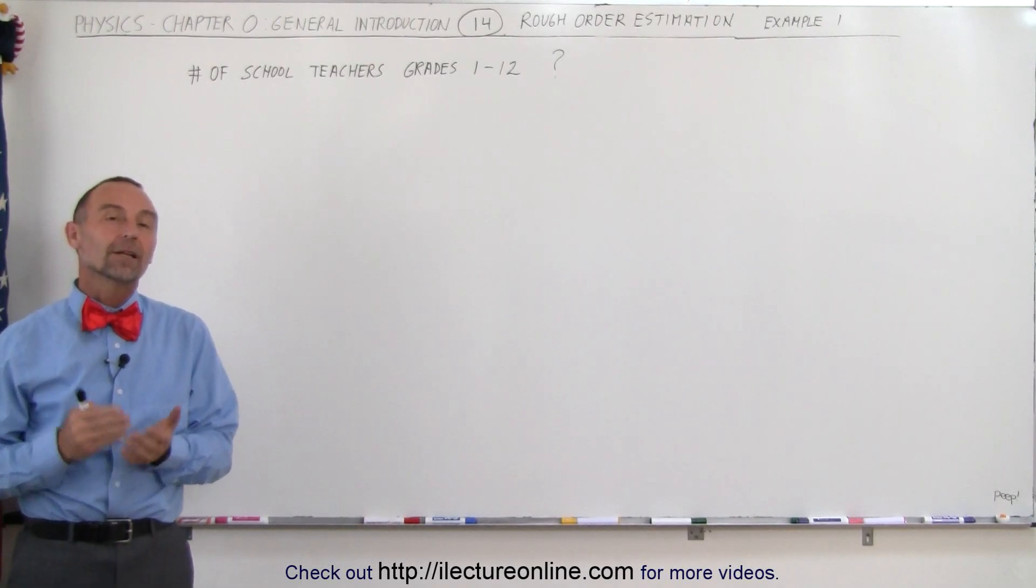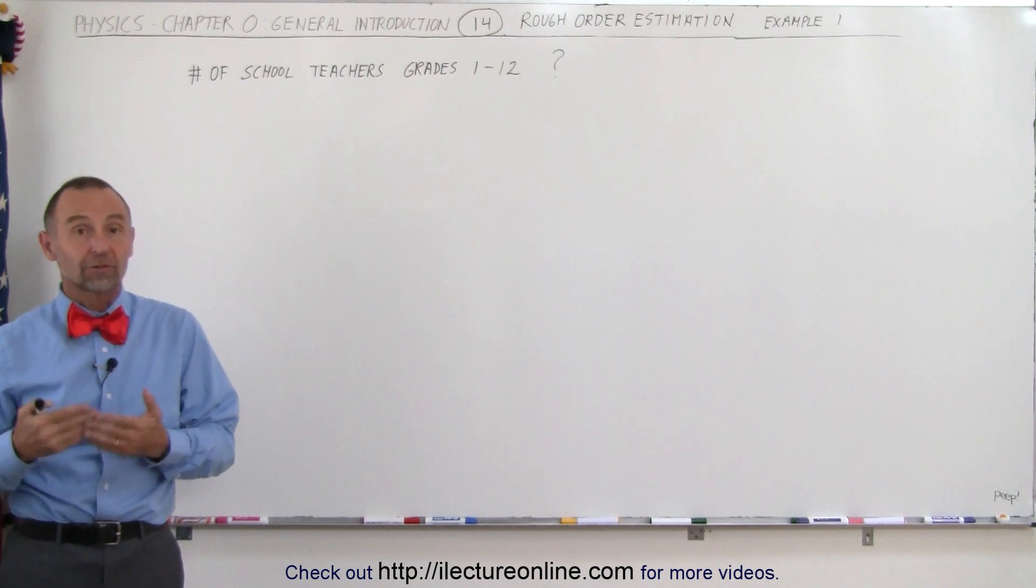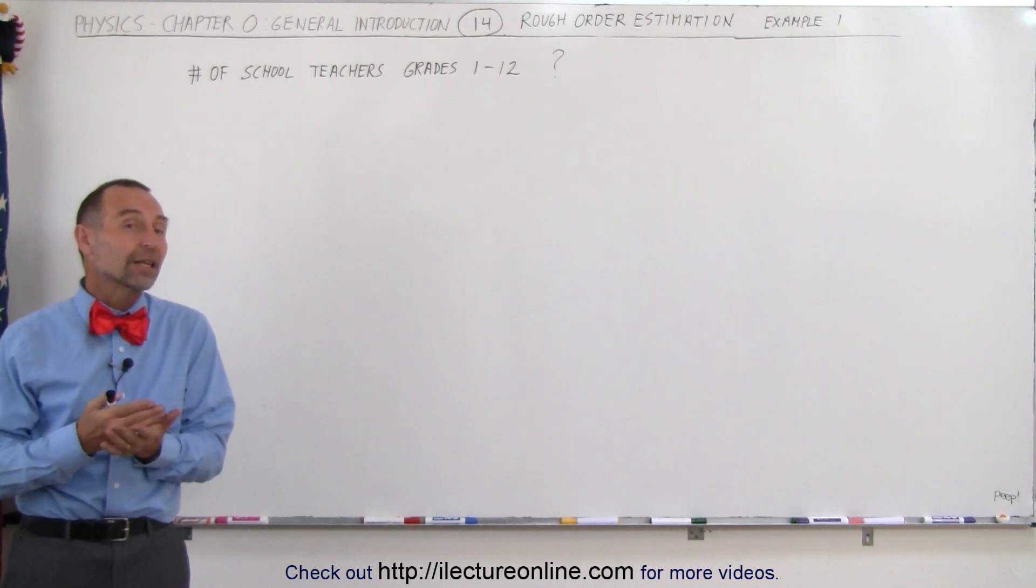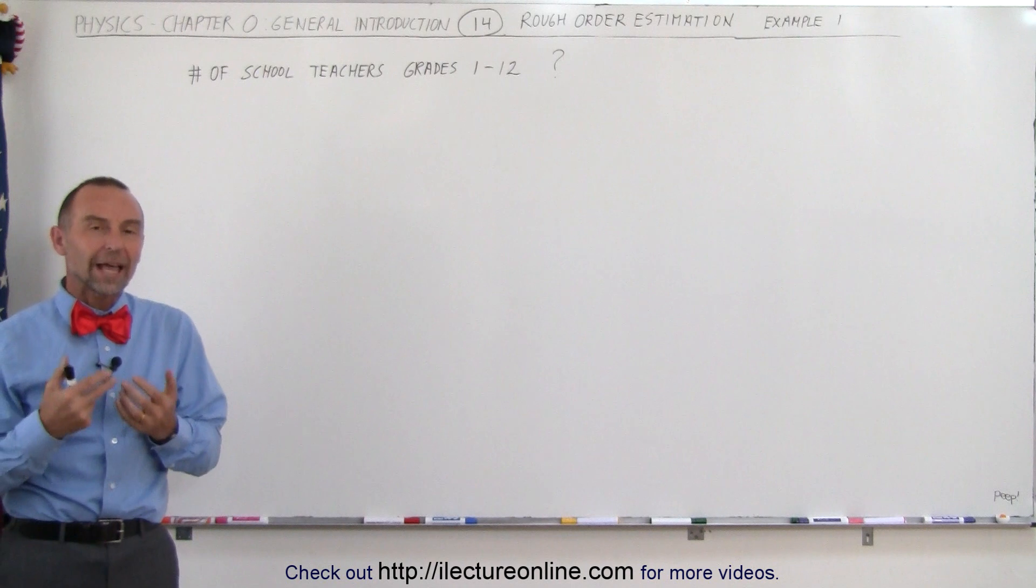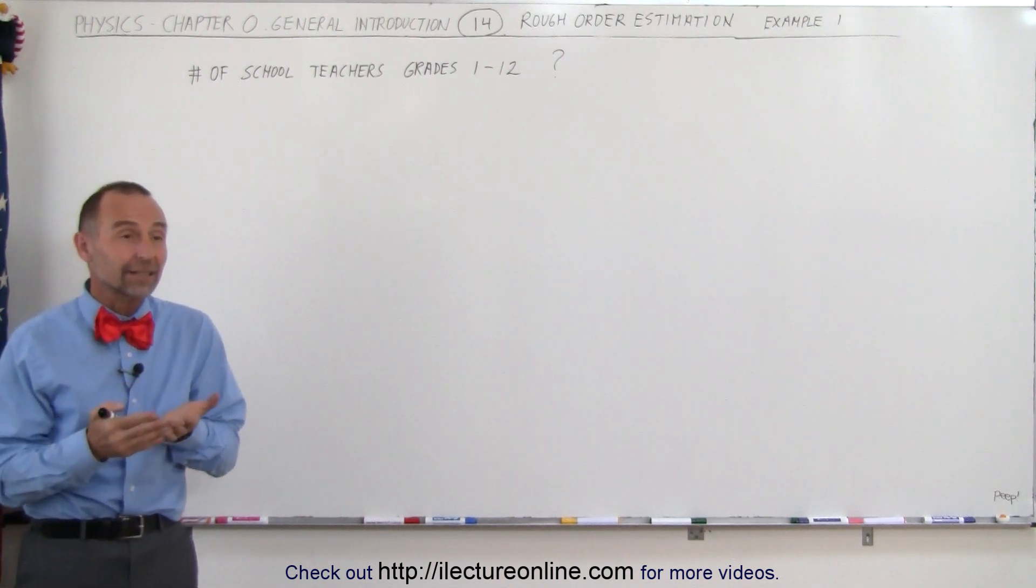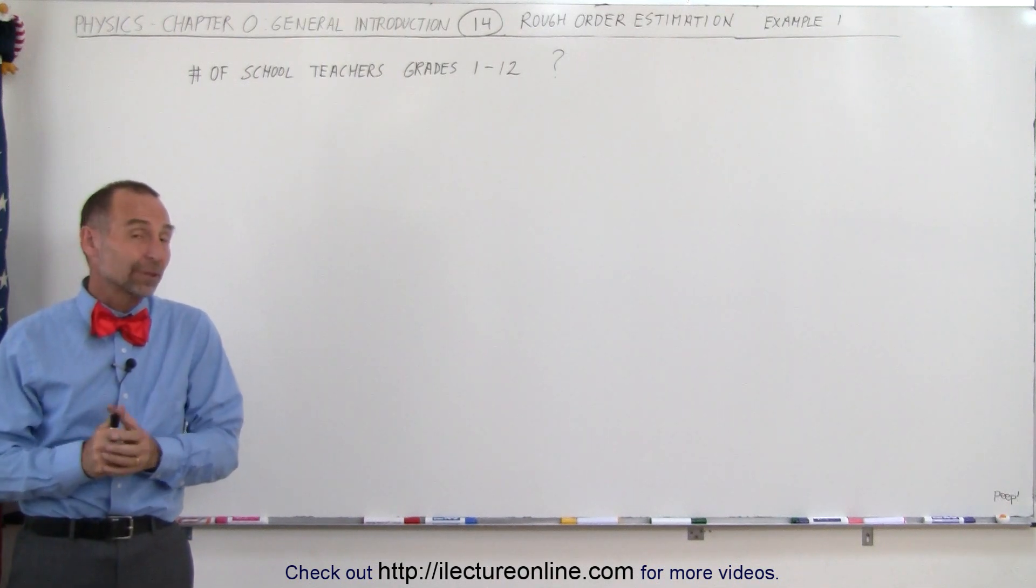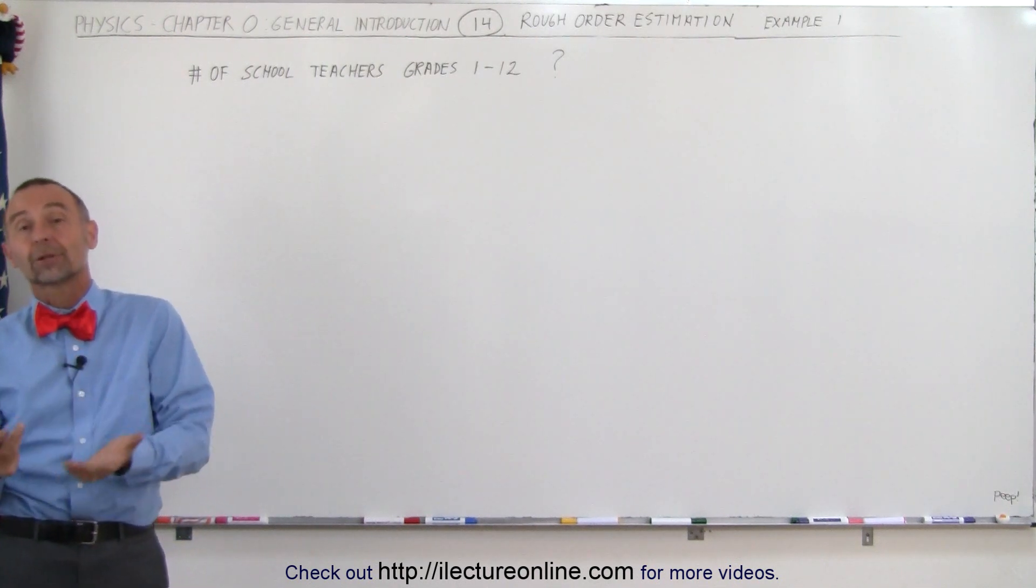Welcome to Electron Online. An often overlooked skill that students, scientists, teachers, anybody that deals with science should have is the ability to quickly, very quickly, without using a calculator, have a rough order estimation of what the answer may be to a particular problem or question.